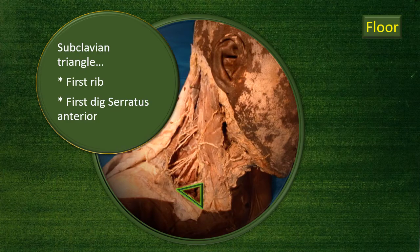In the subclavian triangle, below the omohyoid, additional contents of the floor include the first rib and the first digitation of the serratus anterior muscle.